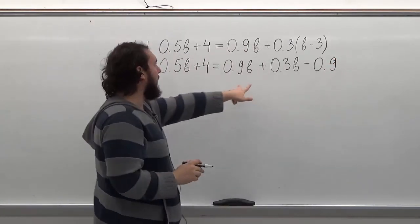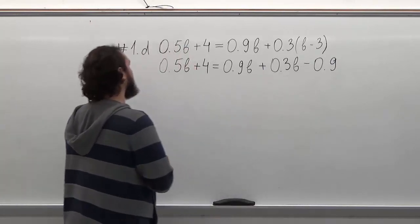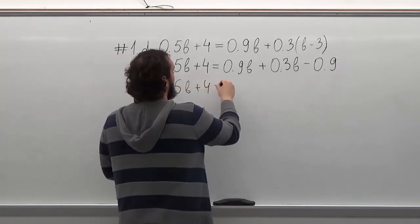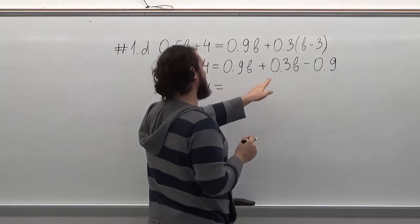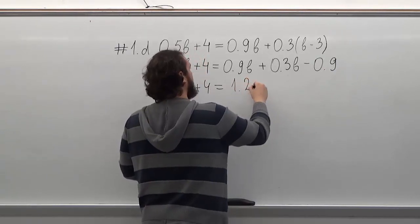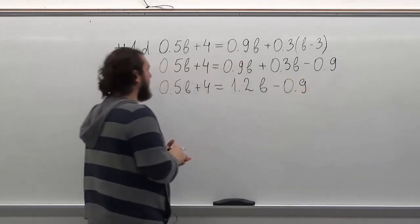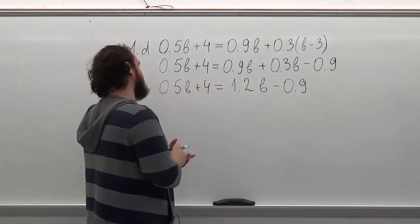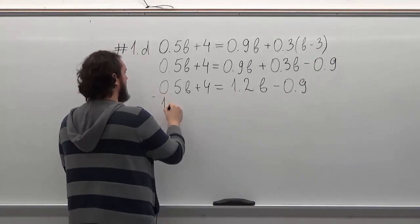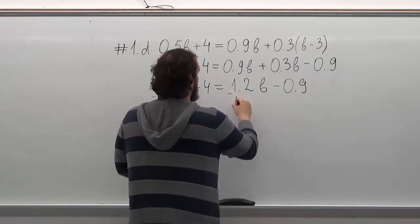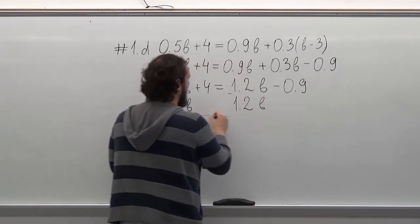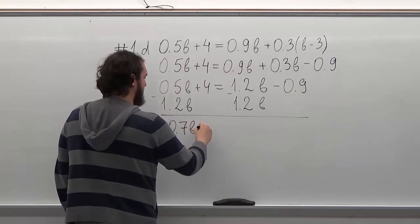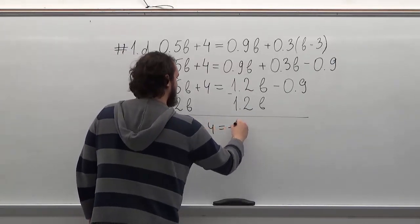Now we want to add those two members together. So we get 0.5B, and 0.9 plus 0.3 is going to be 1.2B minus 0.9. Now we need to subtract 1.1B from both sides of the equation. So here we're going to have minus 0.7B plus 4 is equal to minus 0.9.